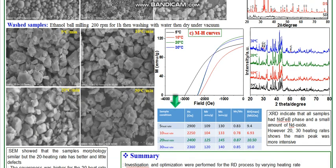For heating rates of 5, 10, 20, and 30 degrees C per minute, the micrographs and XRD patterns all show a pure NdFeB phase with a minor Nd2O3 phase visible around 30 degrees two-theta. From the calculated magnetic properties shown in the table, the 20 degrees C per minute heating rate sample shows the best coercivity, good remanence, MS value, and MR/MS magnetic squareness ratio of around 0.87.